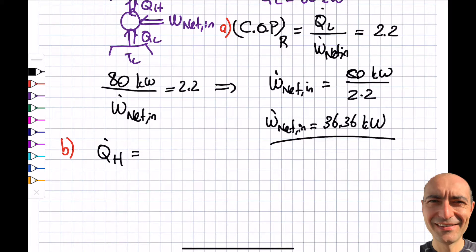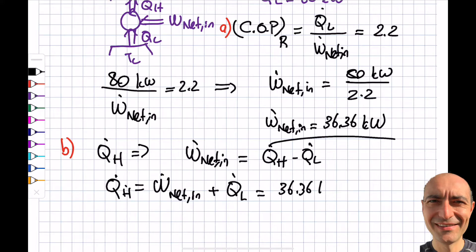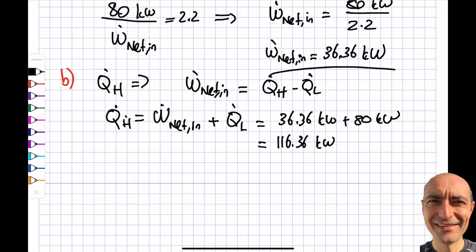W_net_in equals Q_H minus Q_L. From here, Q_H will be W_dot_net_in plus Q_dot_L. I know both of them: W_net_in is 36.36 kilowatts plus Q_L is 80 kilowatts. I get 116.36 kilowatts, which is Q_dot_H. But the question is asking how much over two hours.